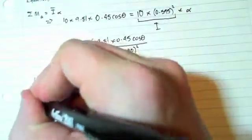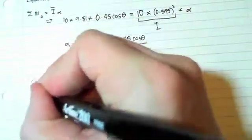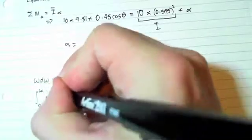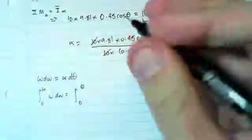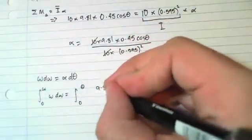So we end up getting the integral from 0 to omega of omega d omega equals the integral from 0 to theta of 9.81.